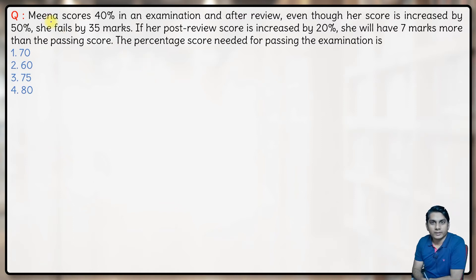In this question, Meena scores 40% in an exam and after review, even though her score is increased by 50%. Let's say the total score or the maximum score is 100T, out of which Meena scores 40%, that is 40T.